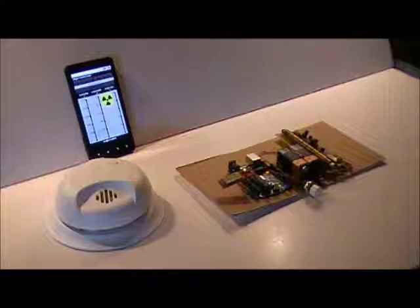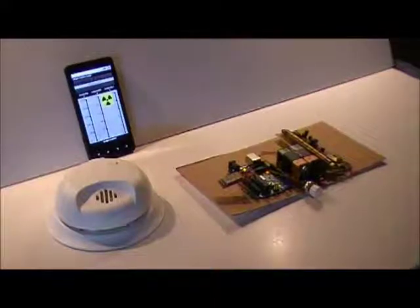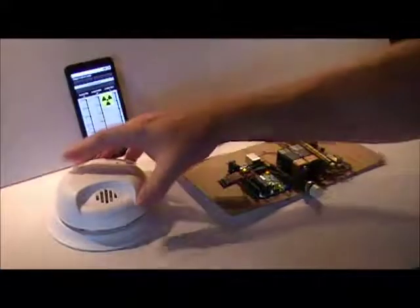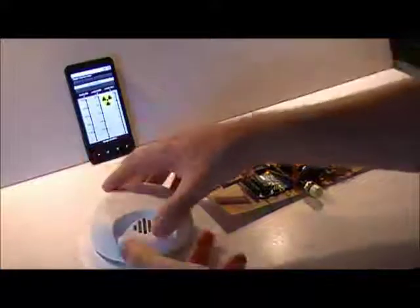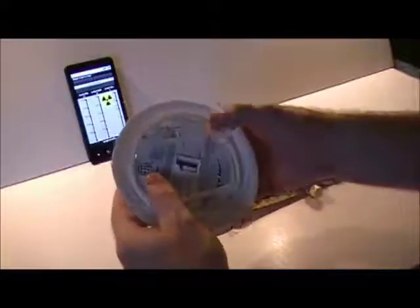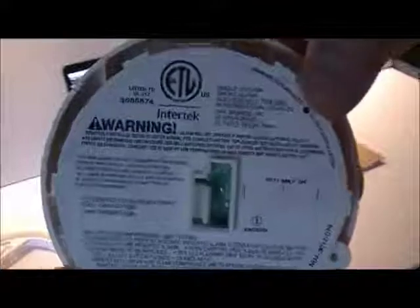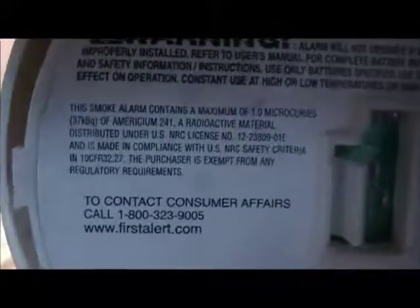The last experiment that I want to run here is to expose the Geiger tube to a higher level of radiation so we can increase the counts. I went to the hardware store and bought a smoke detector. As some of you know, the smoke detector has a small amount of radioactive material in it that they use in their ionization chamber for detecting smoke. That material is called Americium-241.